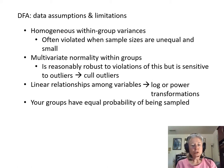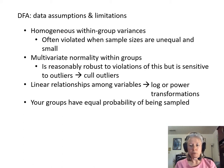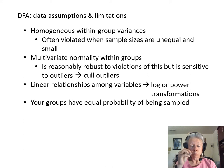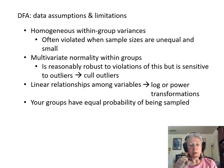Finally, DFA assumes that your groups have equal probability of being sampled — these are called the prior probabilities, the sampling probabilities for each predefined group. They are seldom known and so are typically assumed to be proportional to the number of samples in each group. This is important for the iterative classification process, where you randomly draw members from your data and try to correctly classify them to their groups. If a certain group has an unequal probability of being chosen, that will skew that process.